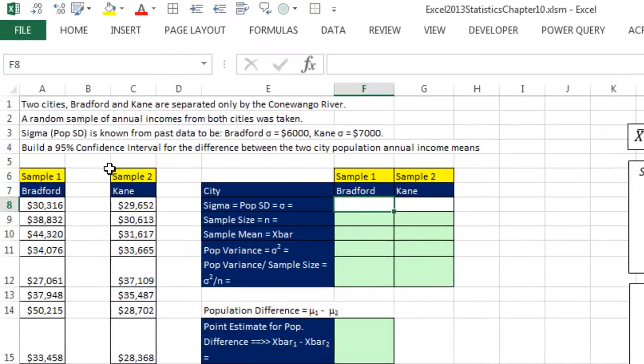Here's our example. Two cities, Bradford and Kane, are separated by only the Conewango River. A random sample of annual incomes from both cities was taken. Sigma is known from past data. Bradford's sigma is $6,000 and Kane's sigma, or standard deviation of the population, is $7,000. Build a 95% confidence interval for the difference between the two city population annual income means. Now we have our two data sets, sample of incomes from Bradford, sample of incomes from Kane.